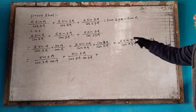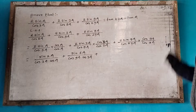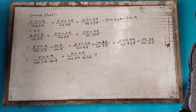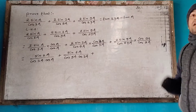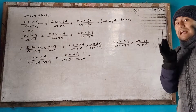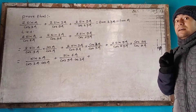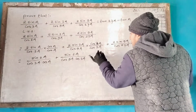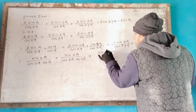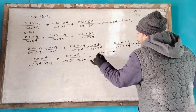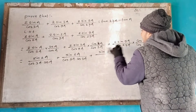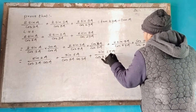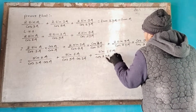2 sin a into cos a, 8a into cos a, divided by cos a into cos a.